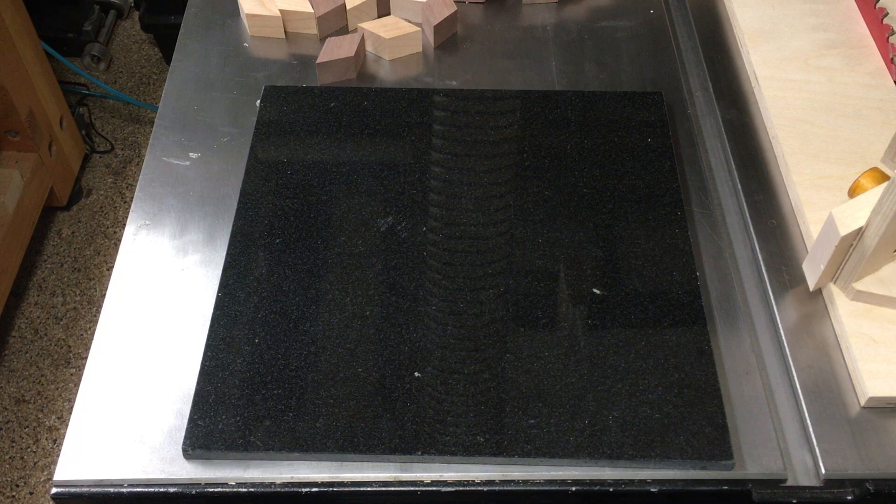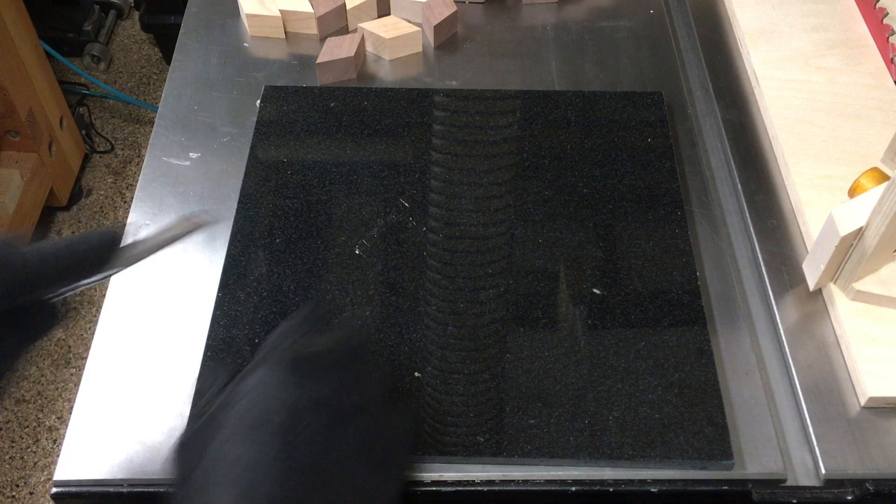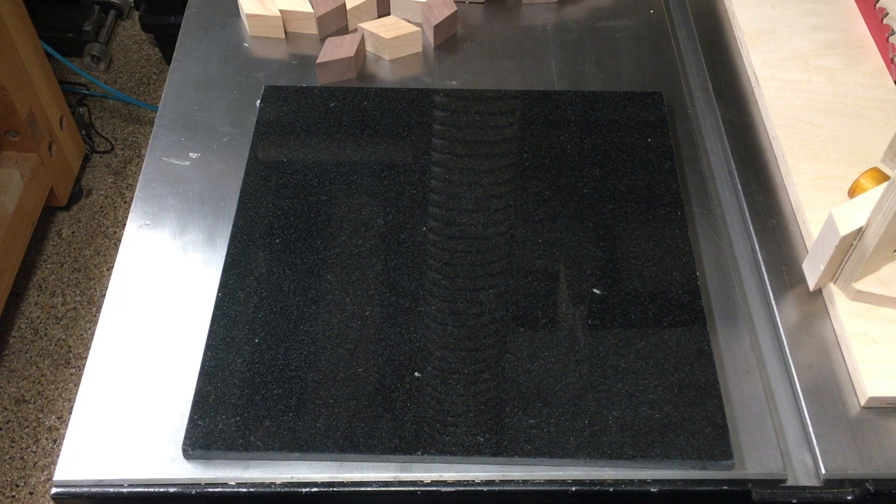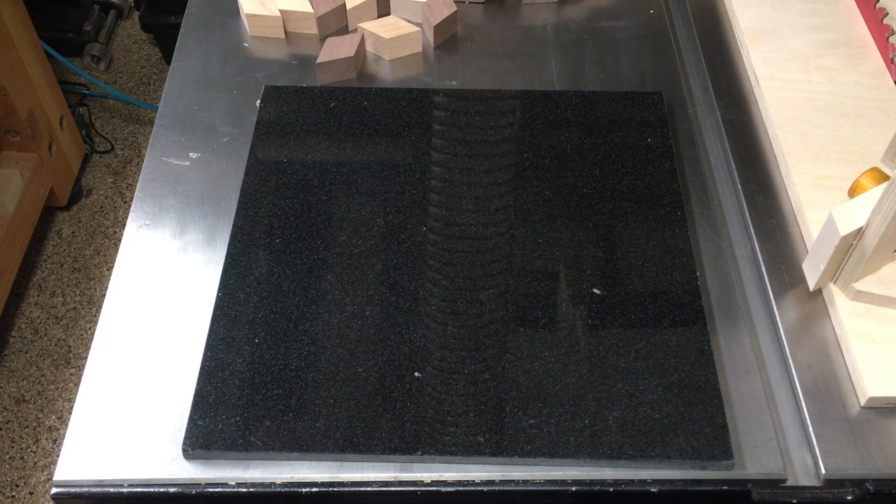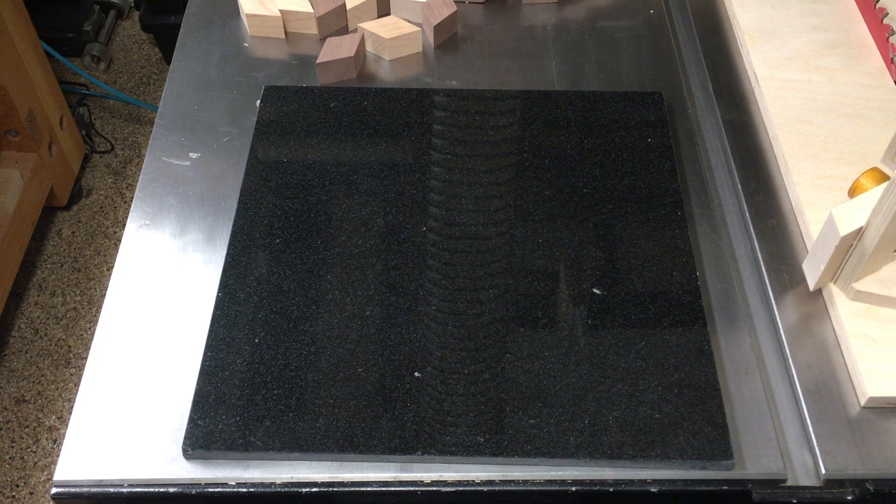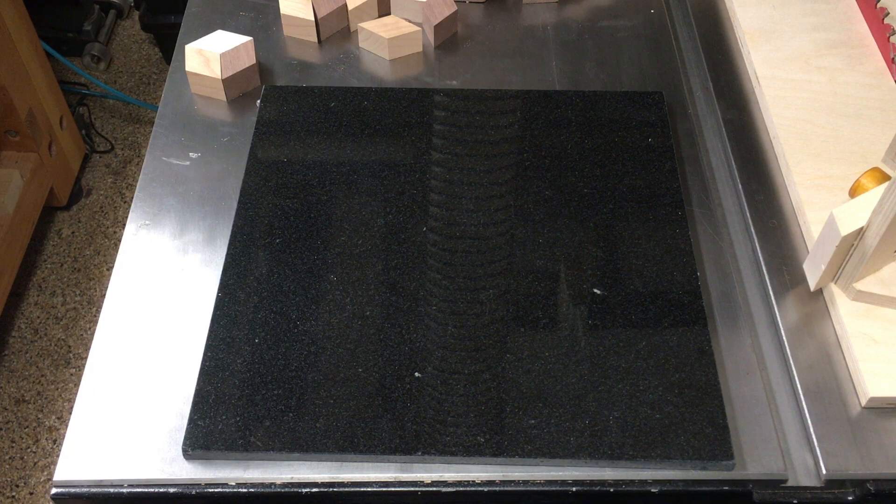First, you want a nice flat surface to work on, and one that lets you easily scrape off any glue squeeze out that accumulates as you're working. This polished granite floor tile works perfectly. It costs 4 to 8 bucks at Home Depot, depending on the color. And because it's portable, you don't have to do the assembly in your shop. You can do it on your kitchen counter or breakfast table while you're watching This Old House or something on TV.